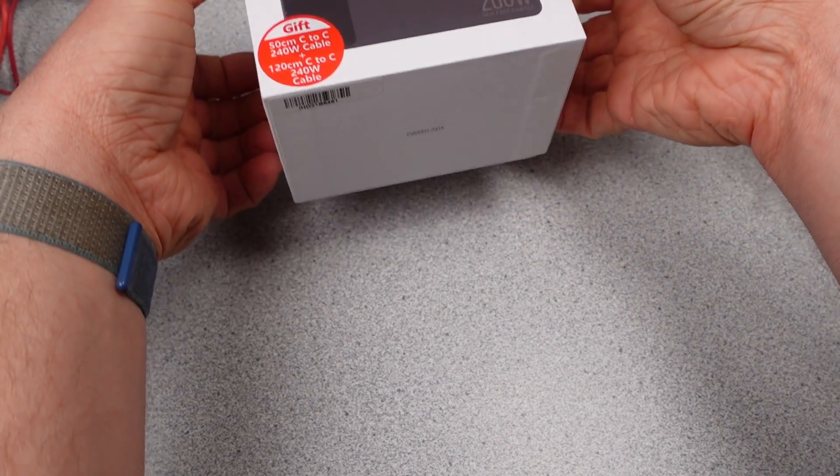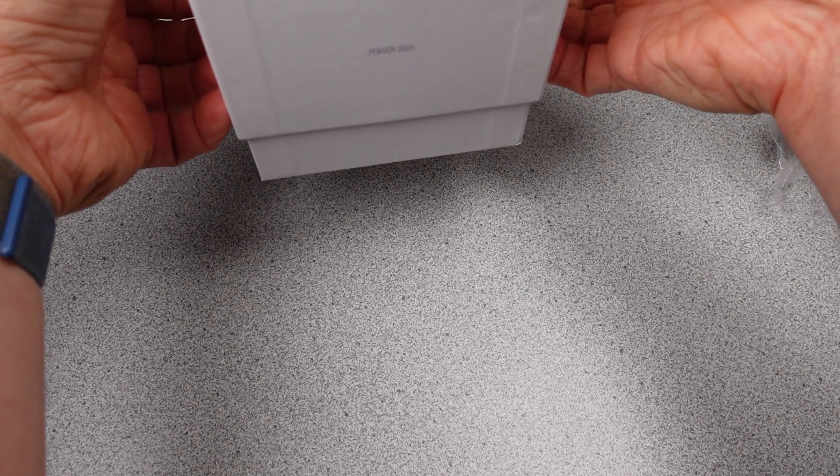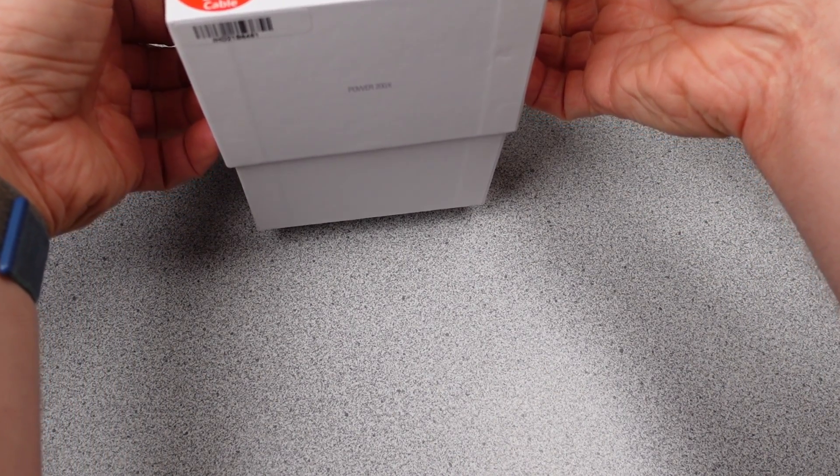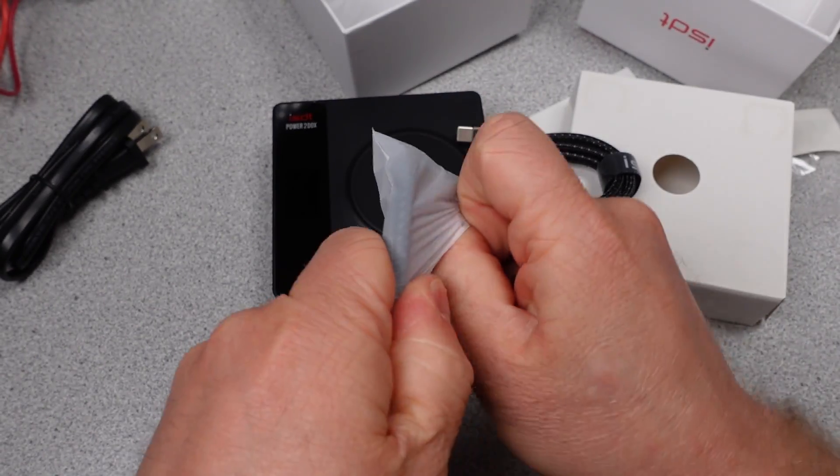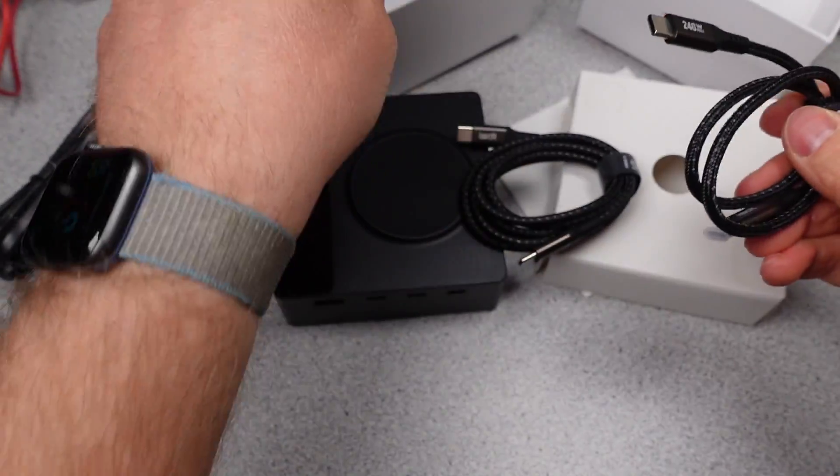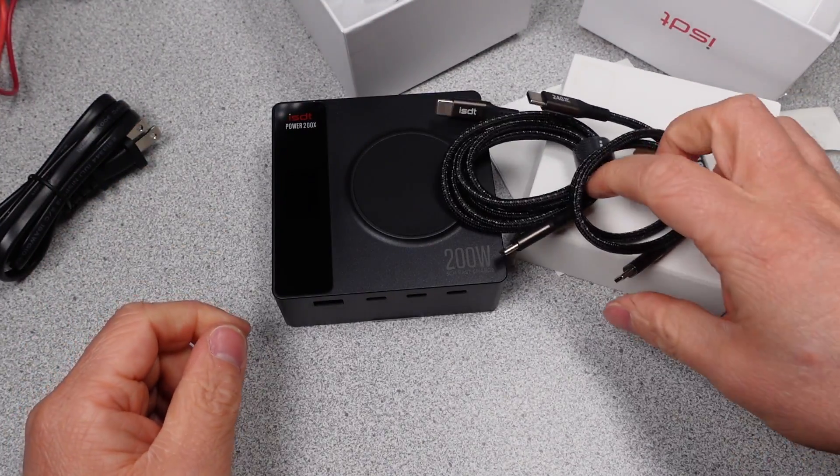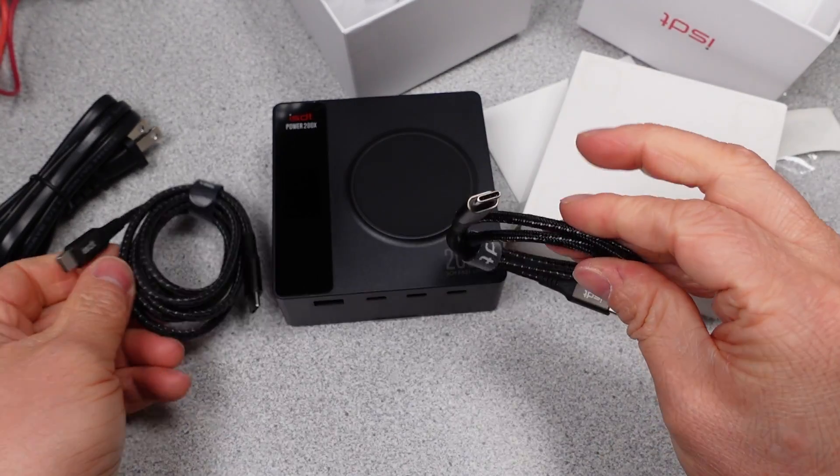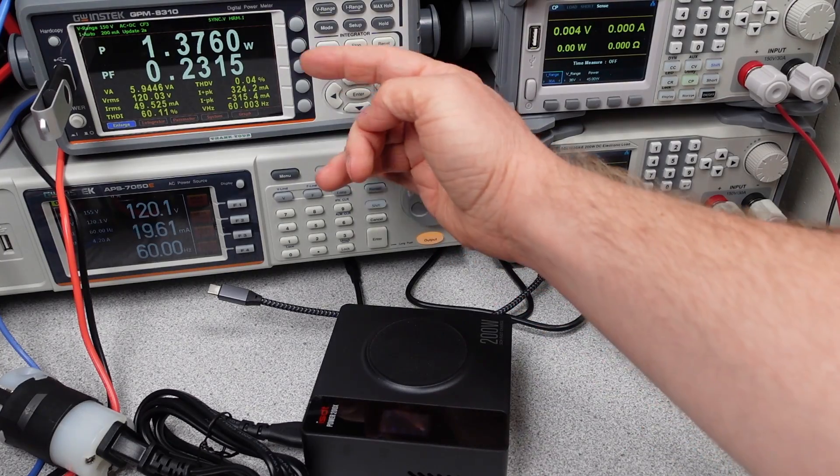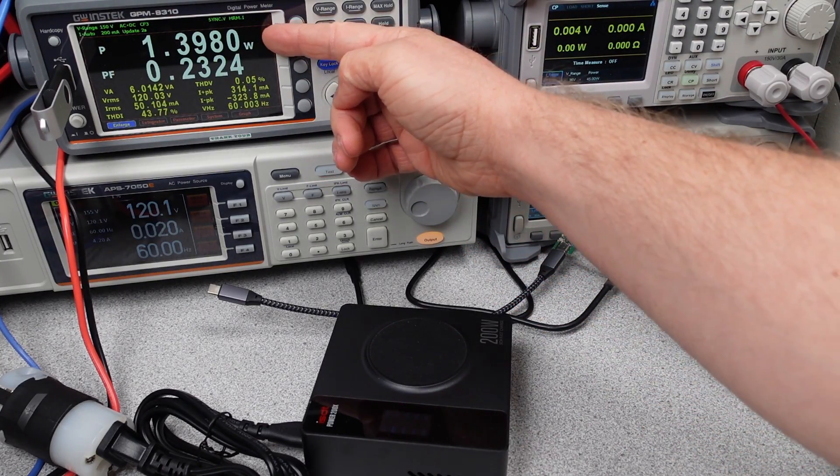Can the 200X be the saving grace for these things? The unboxing experience is basically the same. Adapter has no extra markings. You do get two USB-C to C cables. I didn't check to see if these are real. I'm jumping right into plugging this thing in. Just like the other one, this has terrible idle power consumption so no improvement there.